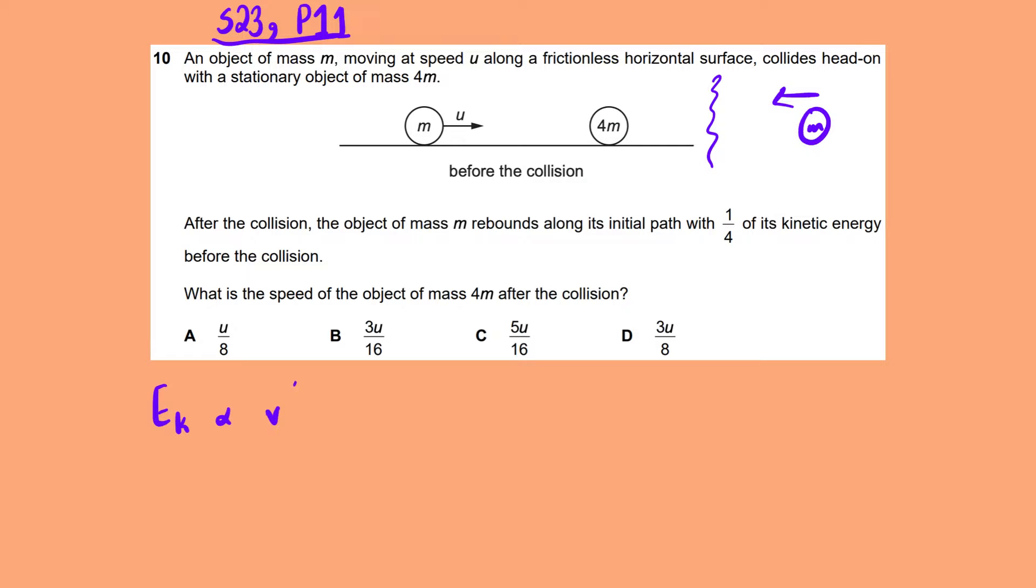So here you can use this idea that kinetic energy is half mv square, so it's basically proportional to v square. So for kinetic energy to be one-fourth, this must have been the square of some number. This must have been some number whose square gives you one-fourth. So basically it must have been some root of one-fourth.